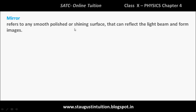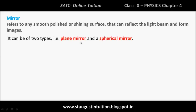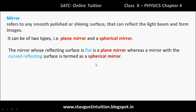A mirror refers to any smooth, polished, or shining surface that can reflect light and form images. It can be of two types: plane mirror and spherical mirror. The mirror whose reflecting surface is flat is a plane mirror, whereas the mirror with a curved reflecting surface is a spherical mirror.